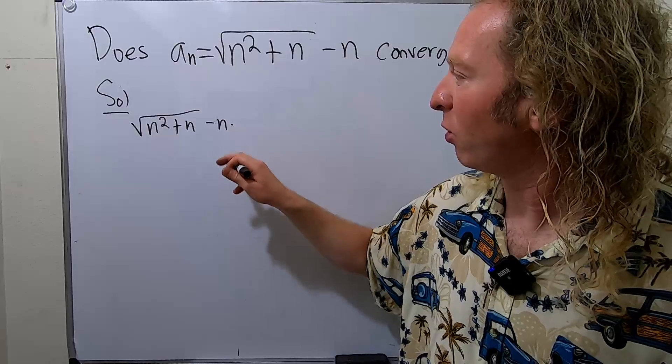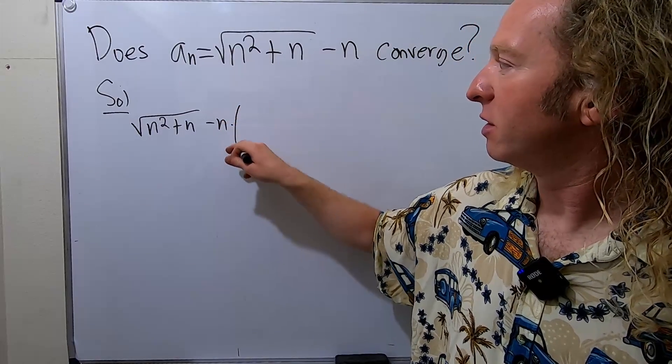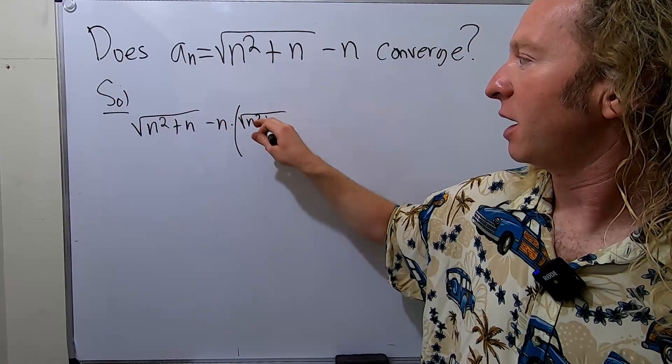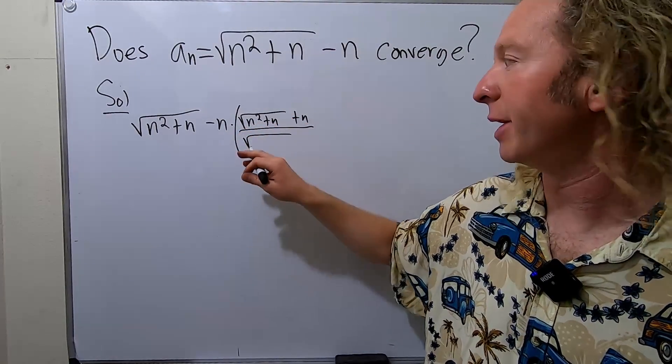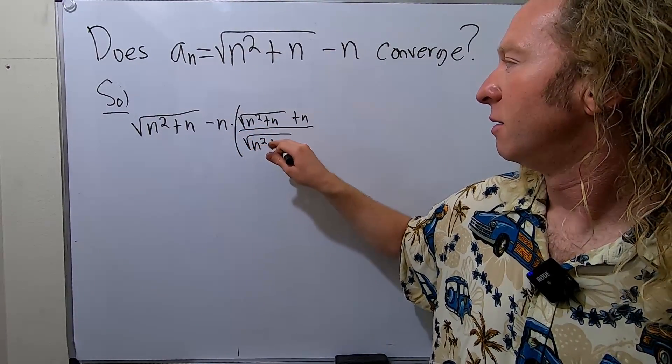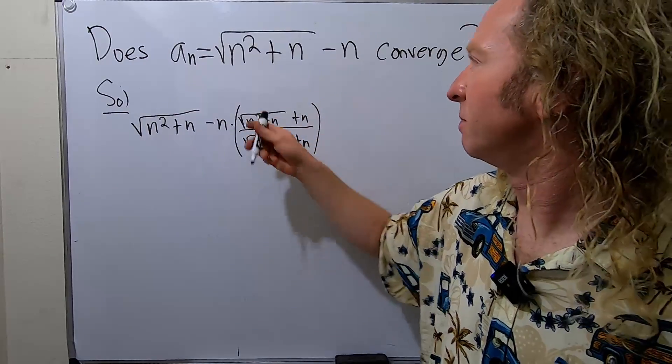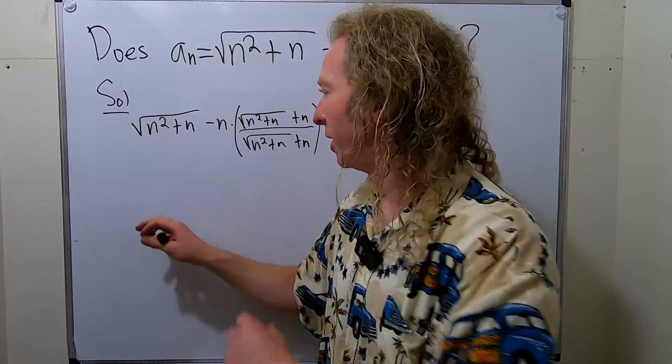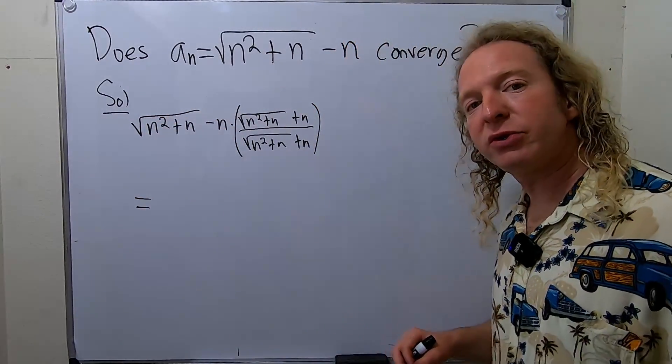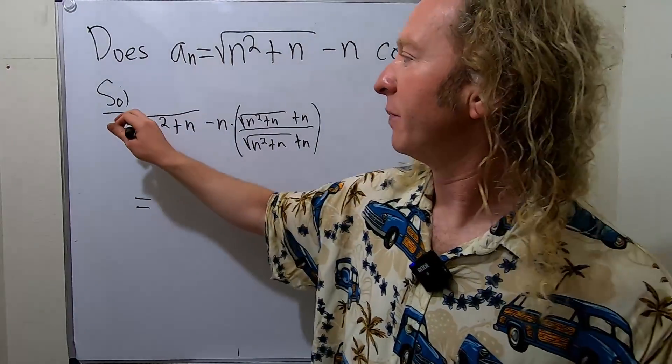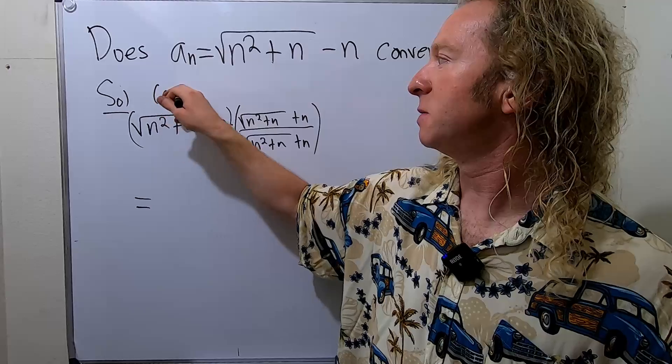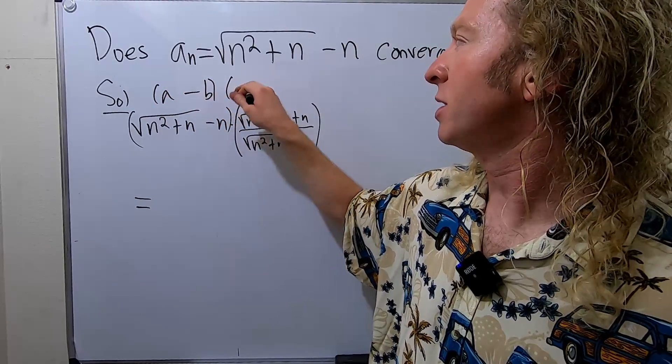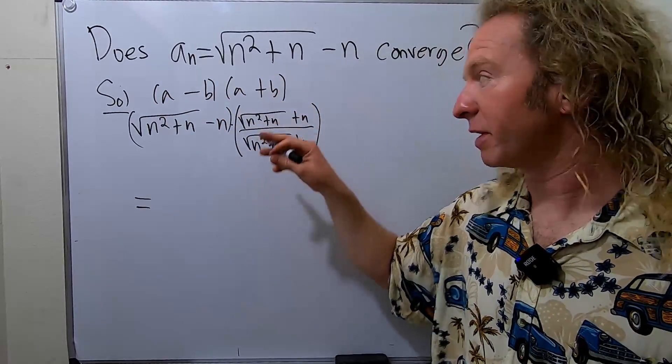We basically multiply by 1 in a clever way as follows. We're going to multiply the expression by 1 using the so-called conjugate. So we took our sequence and multiplied it by 1. Now we're going to use the difference of squares formula. This is a minus b times a plus b, which equals a squared minus b squared.